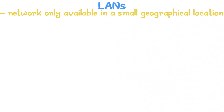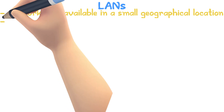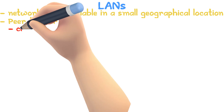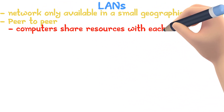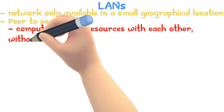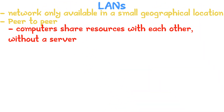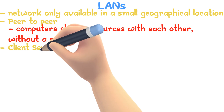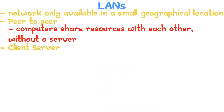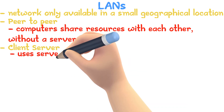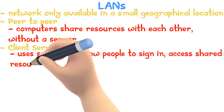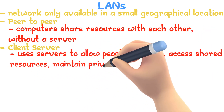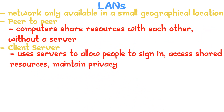There are two different types of LANs. Peer-to-peer: computers share resources with each other without a need for a server. Client-server uses servers to allow many people to sign in, access shared resources, maintain privacy, and more.